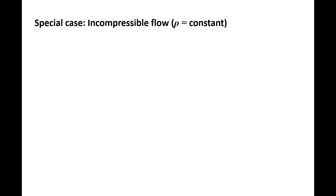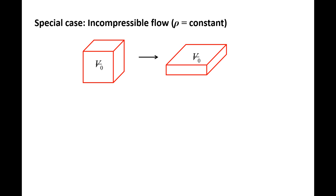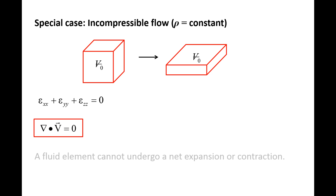A common special case in fluid dynamics is incompressible flow, in which the fluid density is approximated as constant. Since density is the ratio of mass to volume and we examine a fluid element of fixed mass, the volume must also be constant in incompressible flow. If the fluid element expands in one direction, it must contract in another to keep volume constant. Mathematically, since there is no change in volume, the dilation rate is zero, meaning the divergence of the velocity field is zero as well — a fluid element will not experience net expansion or contraction. We will obtain the same result when examining the differential form of the conservation of mass equation in a future video.